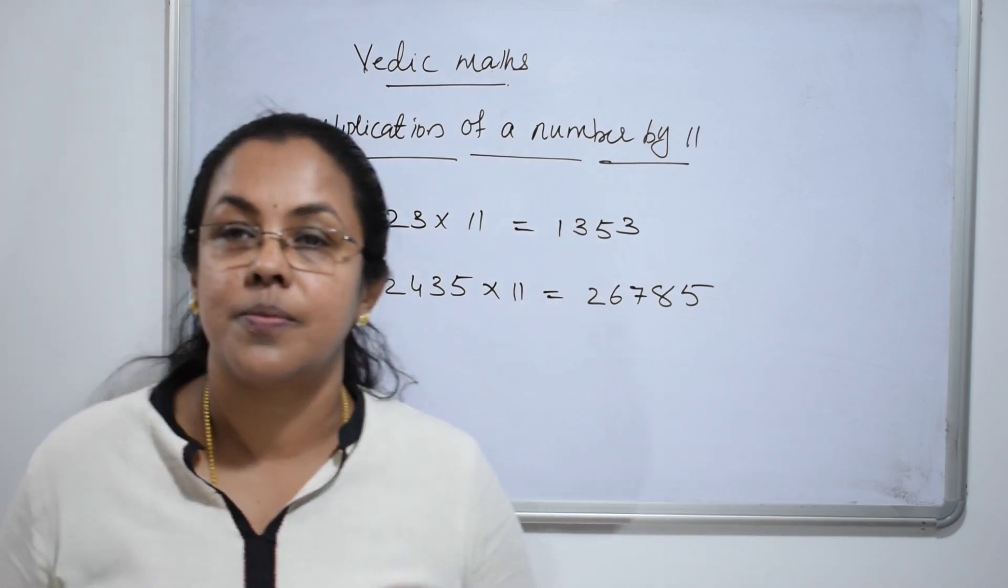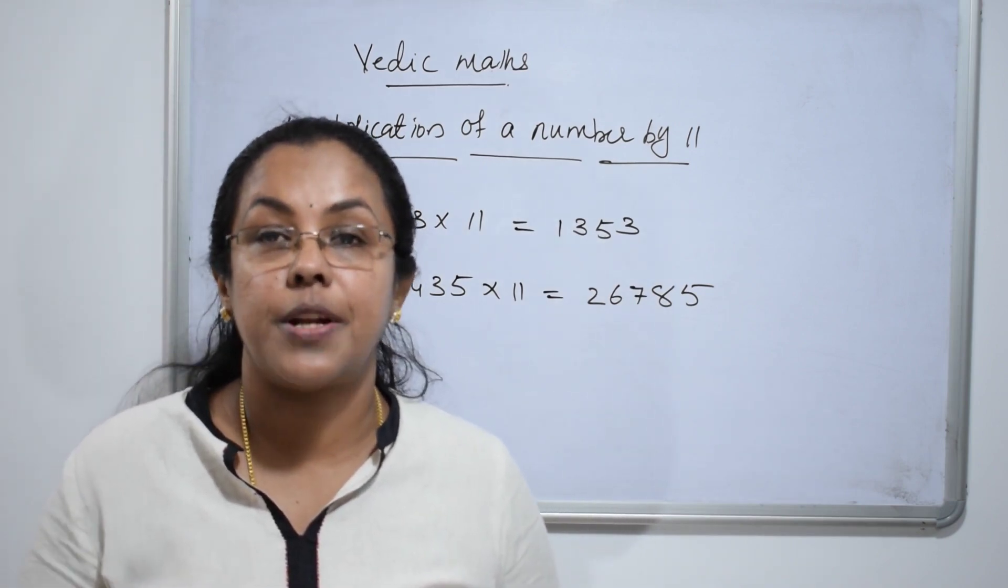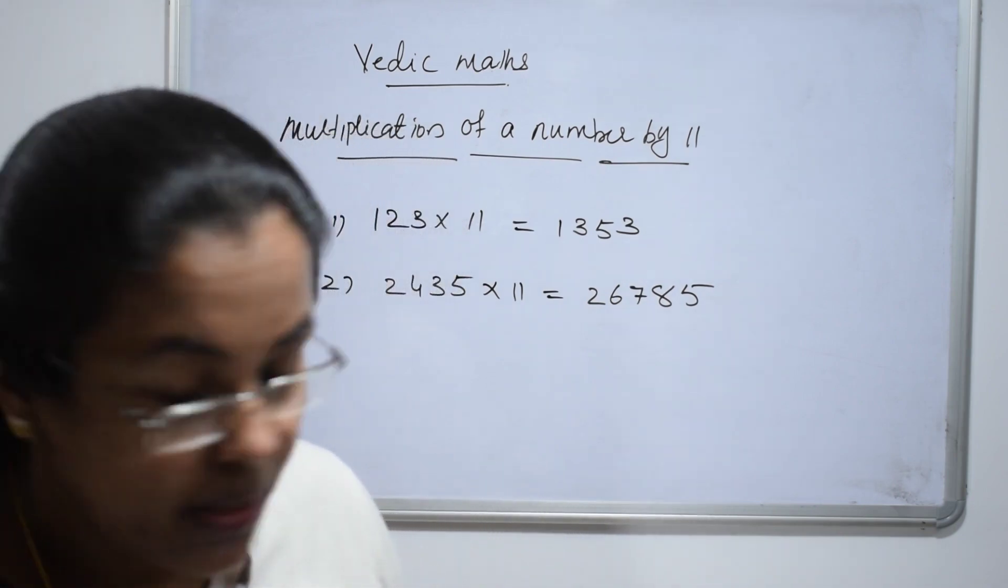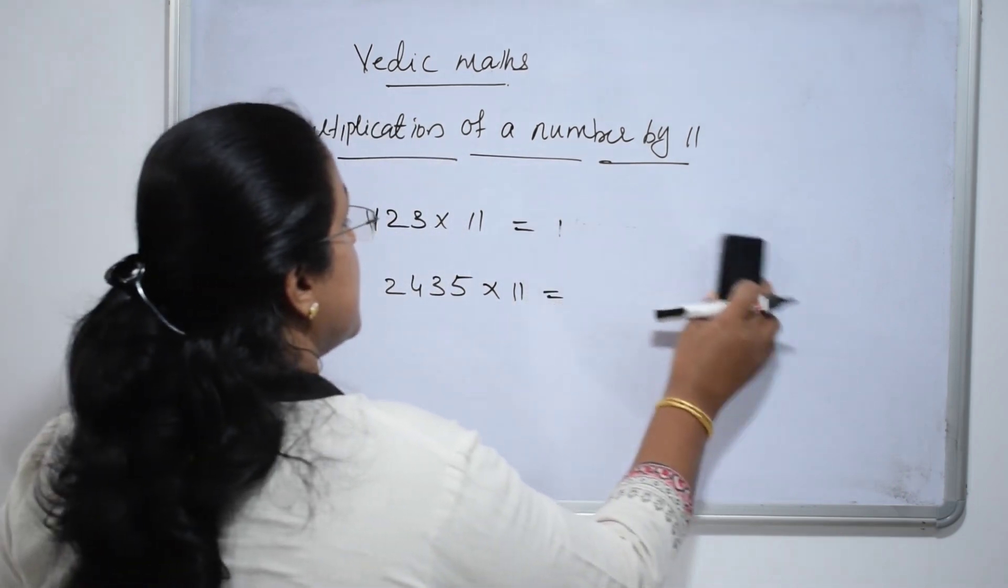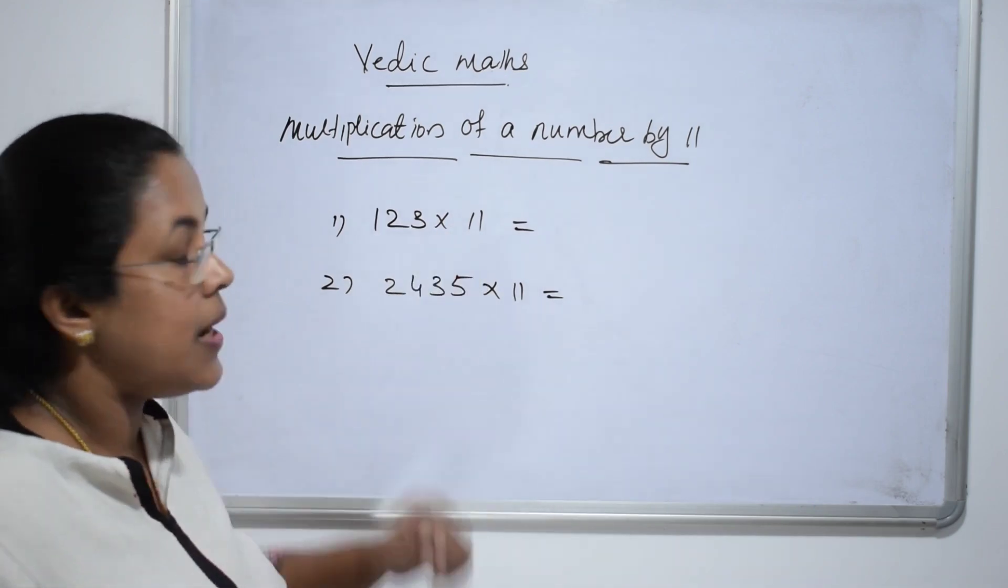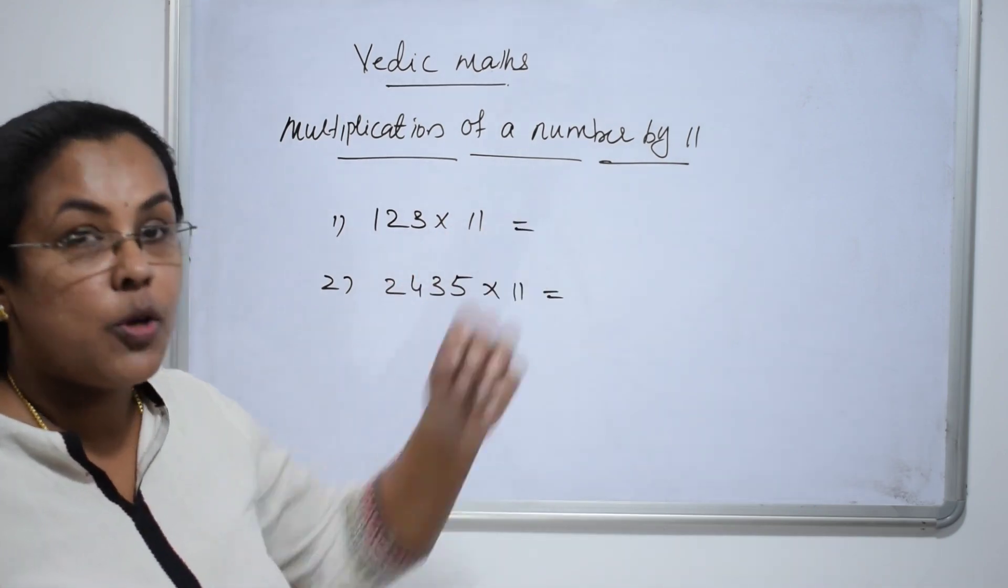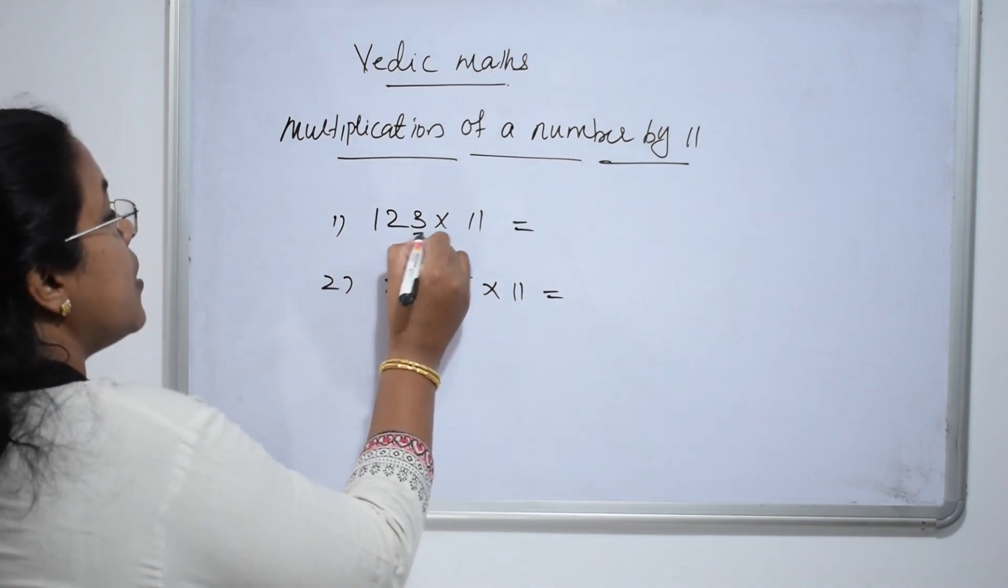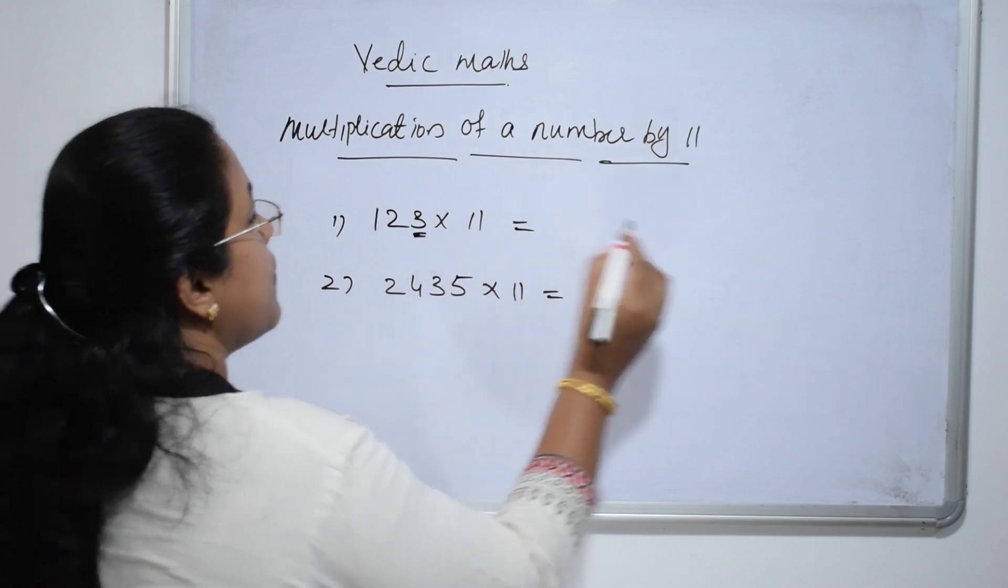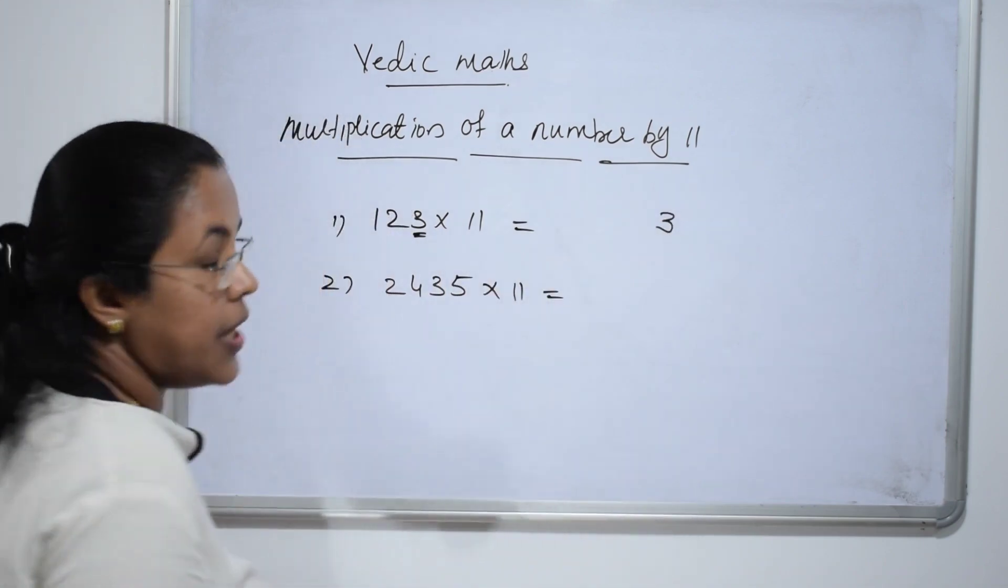Multiplication of a number by 11. It is a very quick method. How to multiply this? In order to multiply a number by 11, start from your right side. What is written in unit place? 3. 3 times 1 is 3. So, write 3 as it is.